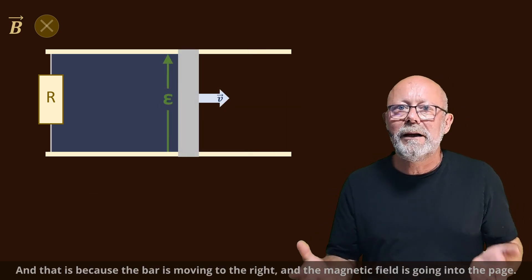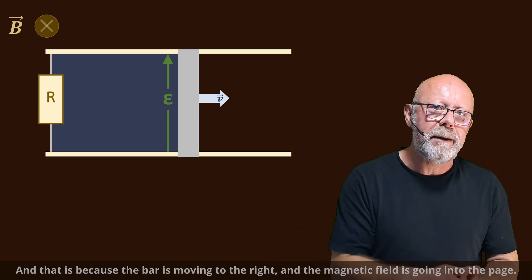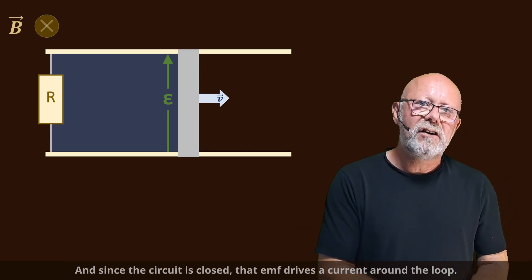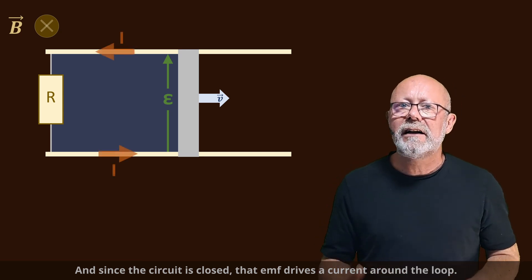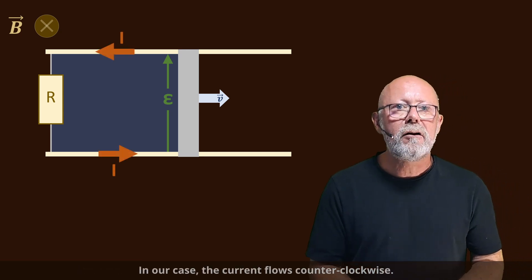We saw in part 1 that the motion of the bar generates an EMF pointing upwards, and that is because the bar is moving to the right and the magnetic field is going into the page. And since the circuit is closed, that EMF drives a current around a loop. In our case, the current flows counterclockwise.